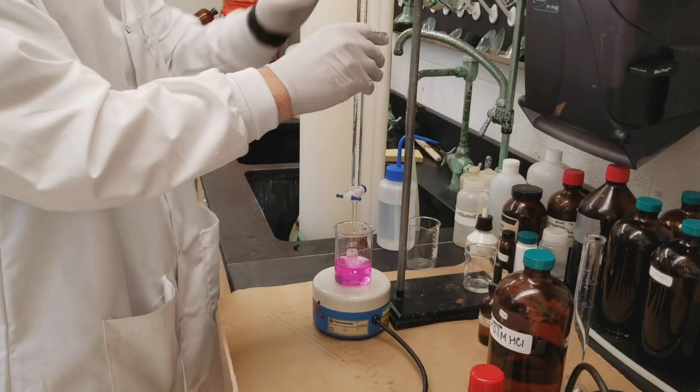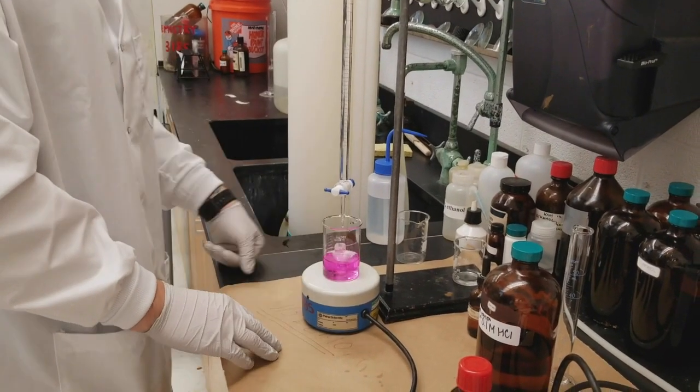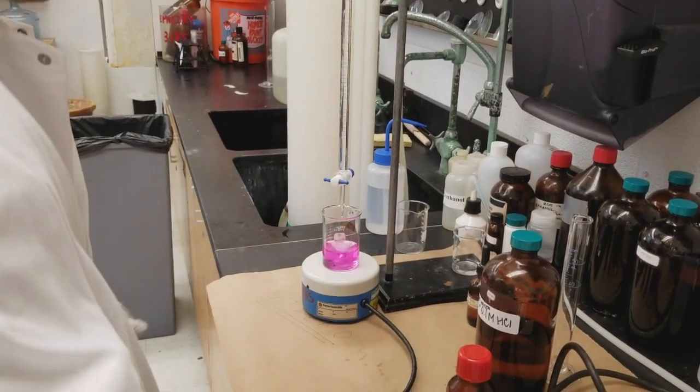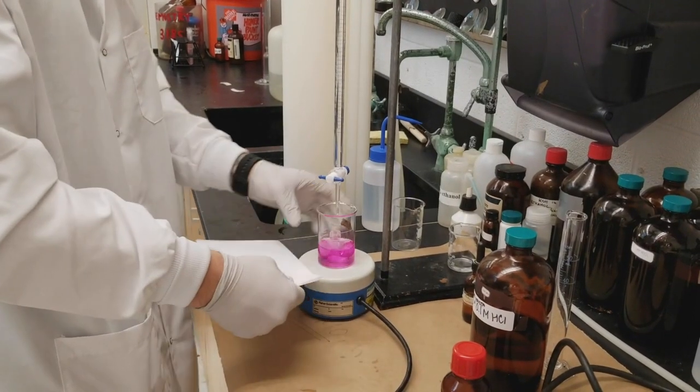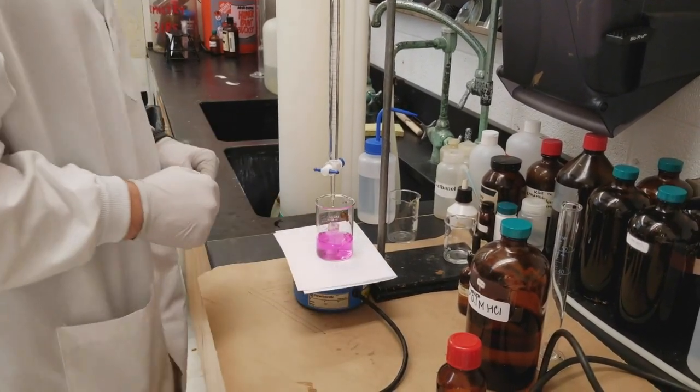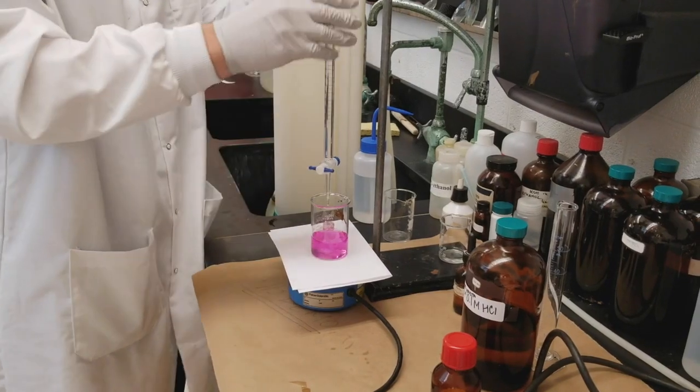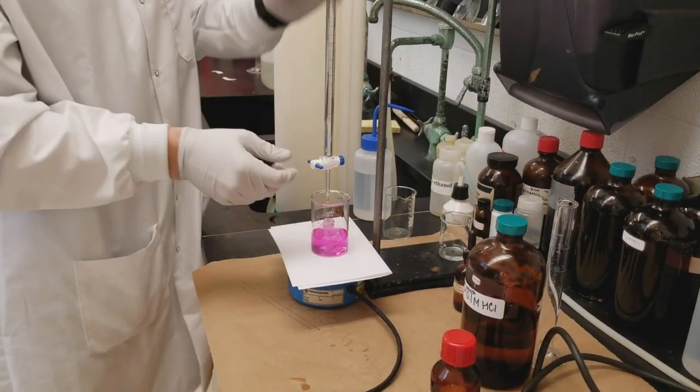So we want to lower the burette so that we ensure that all of the solution is draining right into our beaker. It's a good idea to put a piece of white paper underneath our beaker so that we can tell what the color looks like.